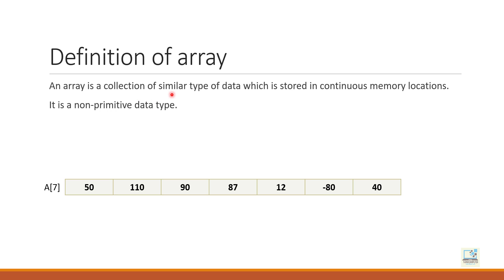Collection of similar type means all of the data stored in the array belong to the same data type. If you create an array of integer, all data will be integer. If you create an array of double, all will be real numbers. If you create an array of characters, all will be characters. You cannot have any array with different types of data — not possible. Array is stored in continuous memory locations, meaning all elements are stored together in one place in the memory.